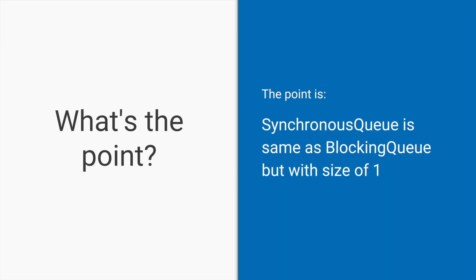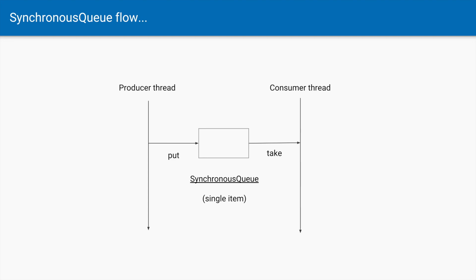The reason we've been discussing blocking queues is that a synchronous queue is conceptually a blocking queue of size one — they behave in the same way. This is the same diagram we had for the blocking queue, but instead of having multiple slots, we have a single item slot.